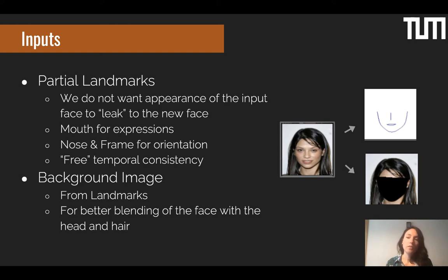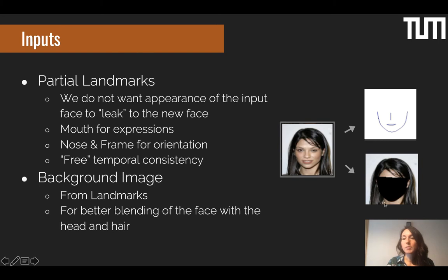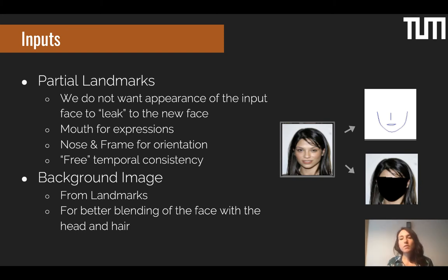Why do we want the background image? We need to generate a face that doesn't look overly artificial. Ideally, we want to blend the face with the background. If we provide the CNN with the background image — which contains skin color and hair color — we have a much higher chance of obtaining a face that blends nicely with the background, even though some identity information is present in, for example, the hair.